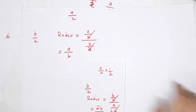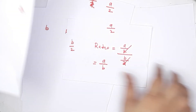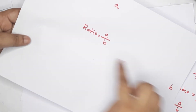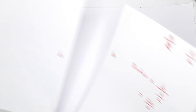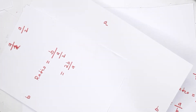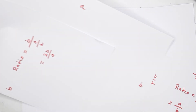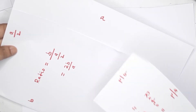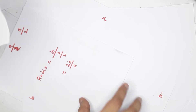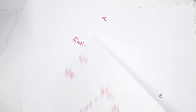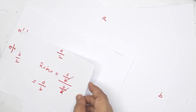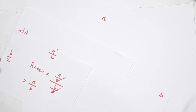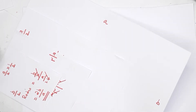This is the ratio. This ratio is a by b. Now this ratio is 2b by a. The ratio is 2b by b, and the ratio is a by b. You can see the paper — now I'll cut this in half.